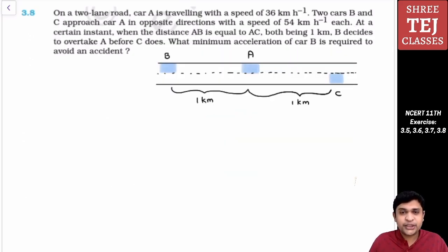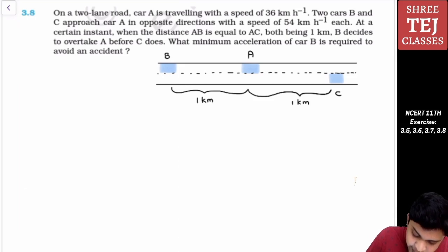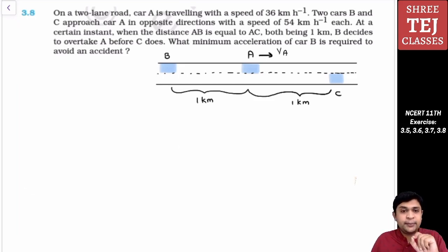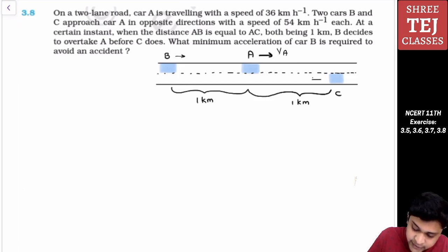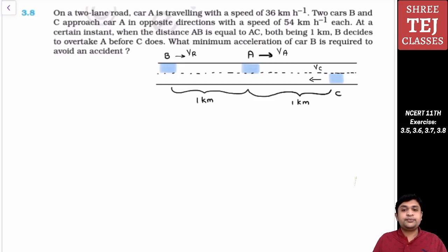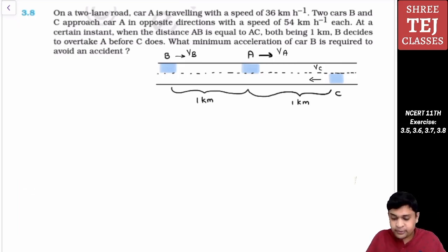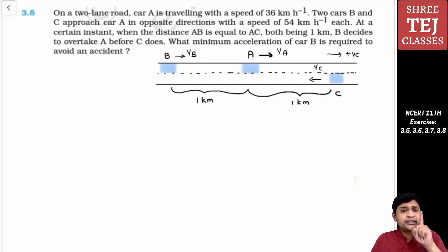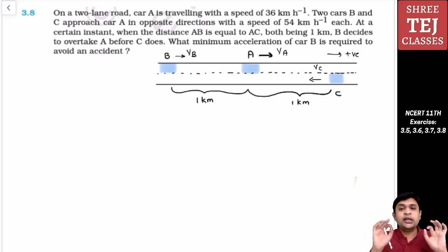Now question 3.8: On a two-lane road, car A is travelling with a speed of 36 km per hour. Two cars B and C approach car A from opposite directions — B approaches from behind, C approaches from the front. Both B and C have speeds of 54 km per hour. VB is positive (+54 km per hour) and VC is minus 54 km per hour. At a certain instant, AB = AC = 1 km.